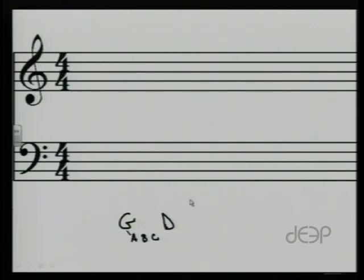So this would be a second, third, fourth, fifth. So the interval from G to D is a fifth. So that's one way that we can determine intervals.